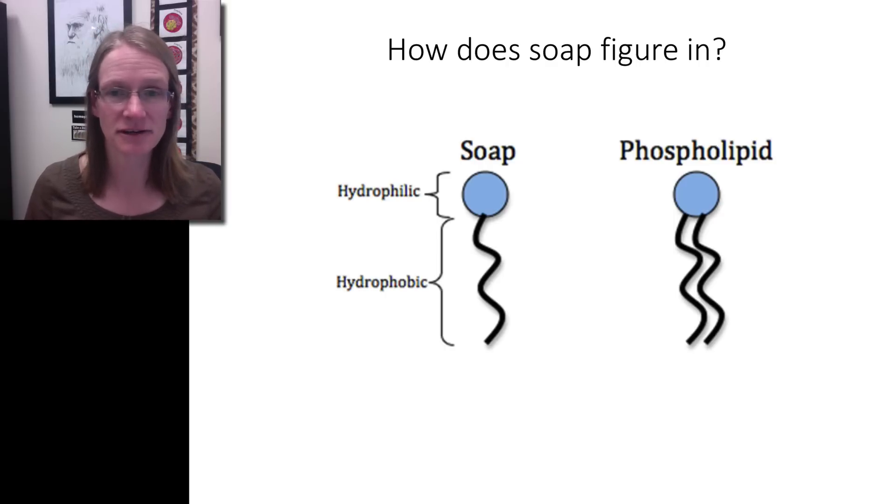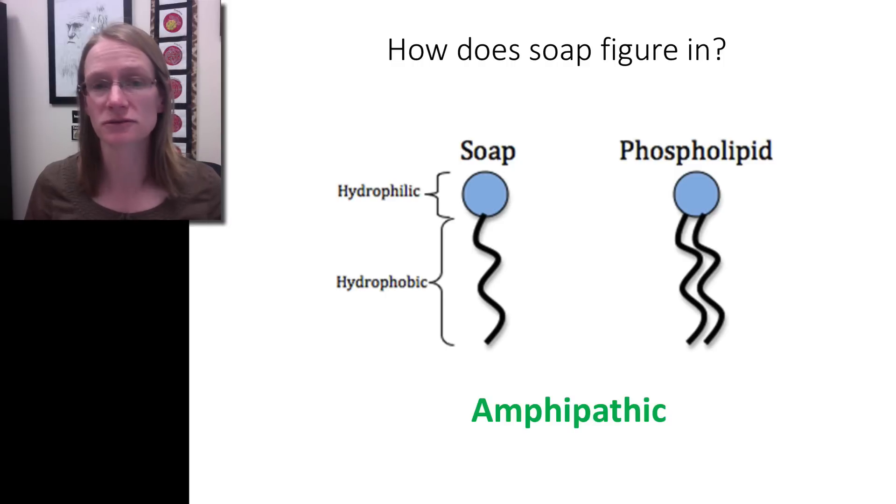Well soap actually has a very compatible structure very similar to something we've already seen. You can clearly see it has this kind of hydrophilic end over here and then a hydrophobic end. Which looks very similar to those phospholipids that we actually saw in a whole bunch of those membranes earlier in the semester. And so it really has this really interesting structure. And that's actually what's called amphipathic. Which means it has both. It has both hydrophilic and hydrophobic. And we can kind of think about why that's actually such an interesting and useful molecule.